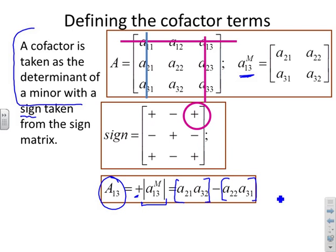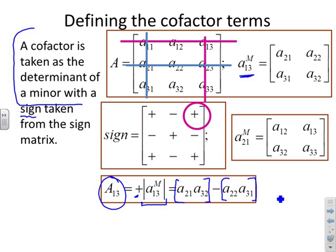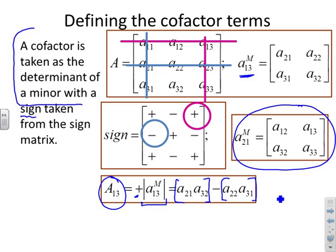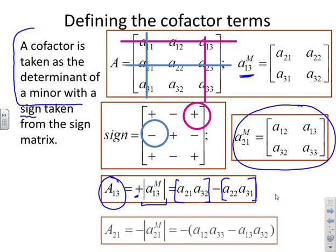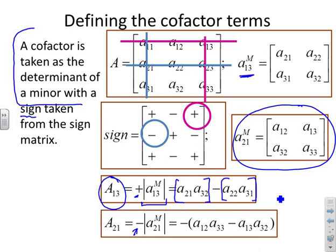Let's look at a separate example: the 2,1 position. The minor for position 2,1 is [A12, A13; A32, A33]. For the cofactor A21, I take the sign from that position in the sign matrix, which is negative, and then the determinant of the minor. So the cofactor A21 equals minus times the determinant — the product of the diagonals minus the product of the off-diagonals. That's the definition of the cofactor.